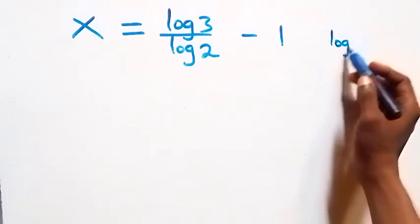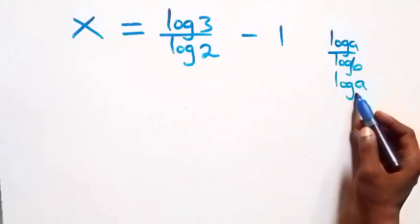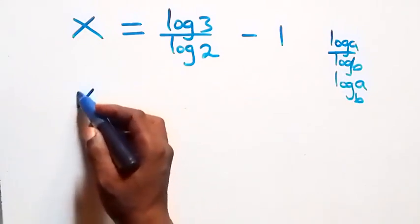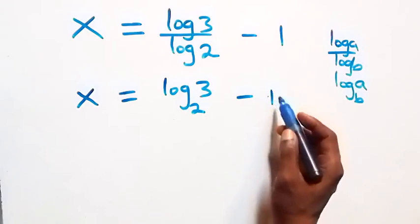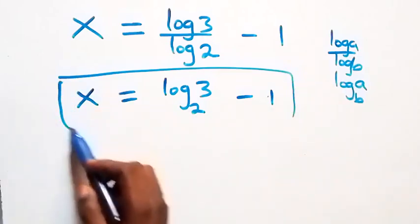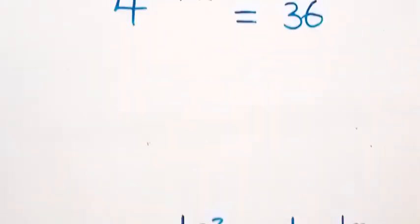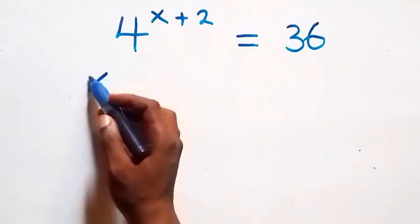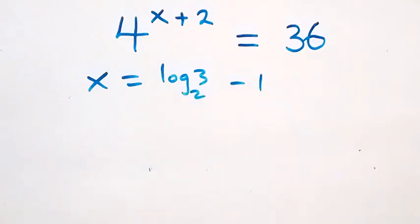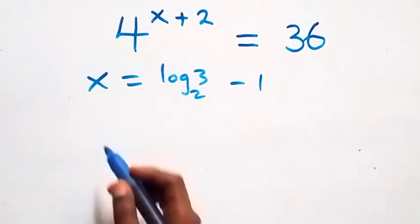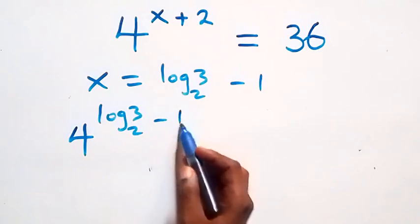We apply the change of base rule: log a over log b is the same as log a to base b. So this becomes x equals log 3 to base 2 minus 1. Now let's check if this satisfies the given problem. We substitute x equals log₂3 minus 1, giving us 4 raised to power (log₂3 minus 1) plus 2 equals 36.